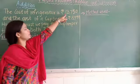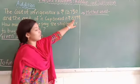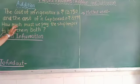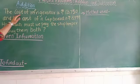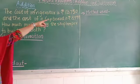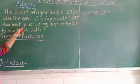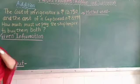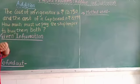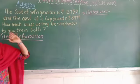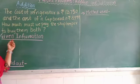The cost of the refrigerator is Rs. 13,750 and the cost of the cupboard is Rs. 8,999. How much must we pay the shopkeeper to buy them both? Now, what is given in the question? The cost of the refrigerator is Rs. 13,750 and the cost of the cupboard is Rs. 8,999. So how much must we pay the shopkeeper — they are asking for the total amount. If we have to buy both, the refrigerator plus cupboard, what will be the total amount paid to the shopkeeper?